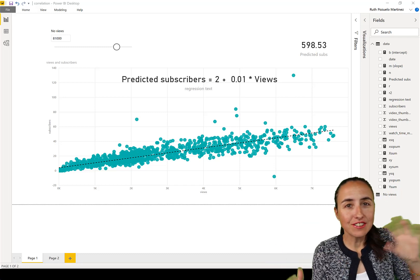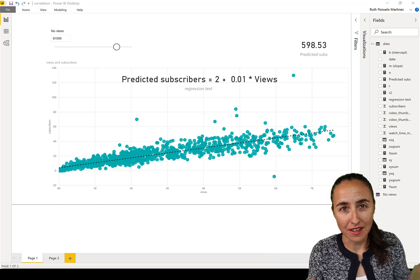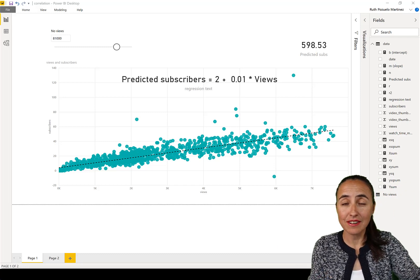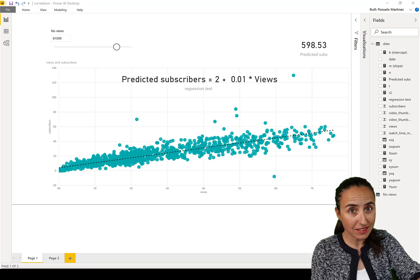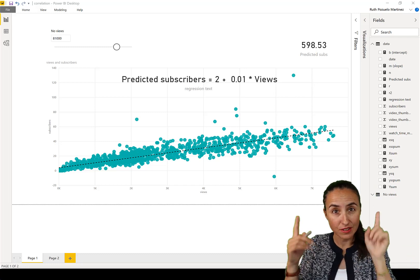Correlation and linear regression are very tied together, so I really recommend you to see the previous DAX Fridays video. I'm going to summarize it here, but just go there and check it in case you get doubts.